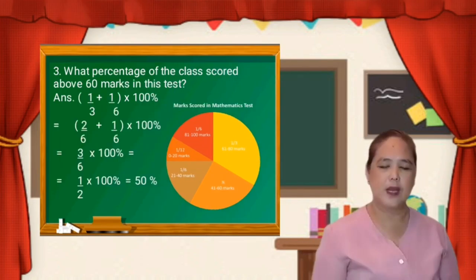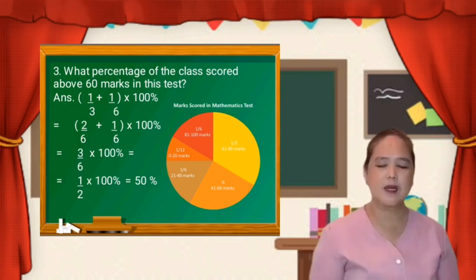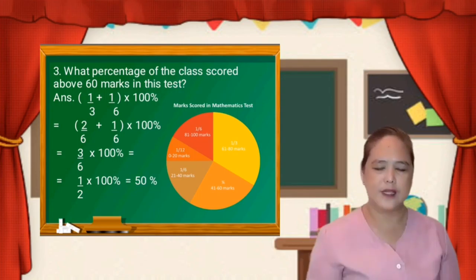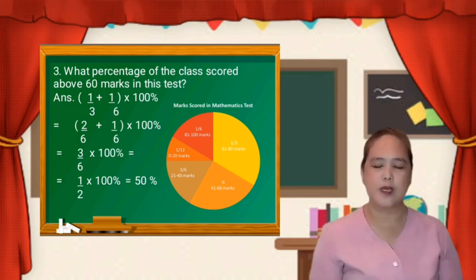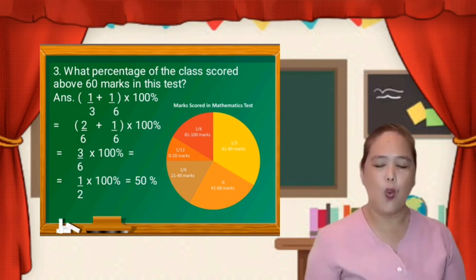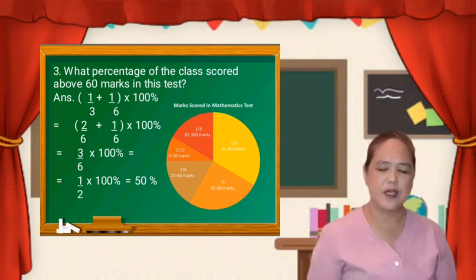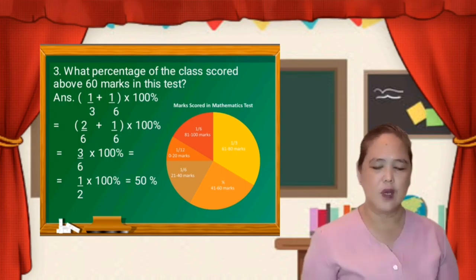So let us have number three. What percentage of the class scored above 60 marks in this test? We have 2 categories who scored above 60 marks: 1/3 and 1/6. So let us add 1/3 and 1/6, then multiply it by 100%. Why multiply by 100%? Because the full graph is equal to 100%. So let us add 1/3 plus 1/6. But this is a dissimilar fraction, so let us get first the least common denominator of 3 and 6.